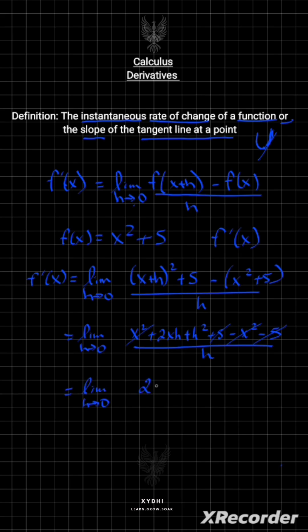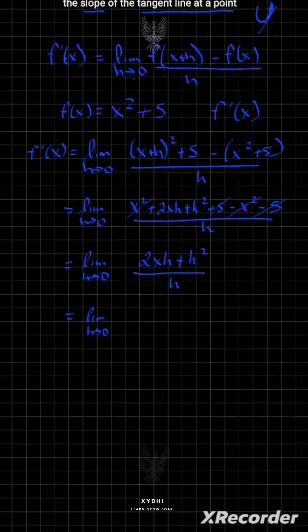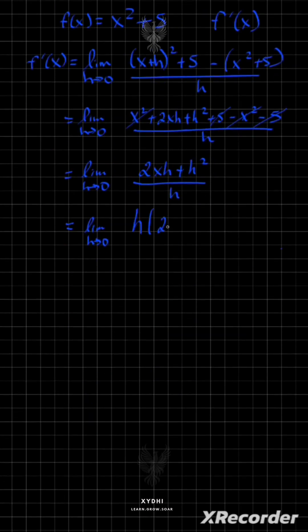Factorizing h out gives h(2x + h) / h. The h cancels, leaving 2x + h. As the limit approaches zero, h becomes zero, so we're left with 2x.